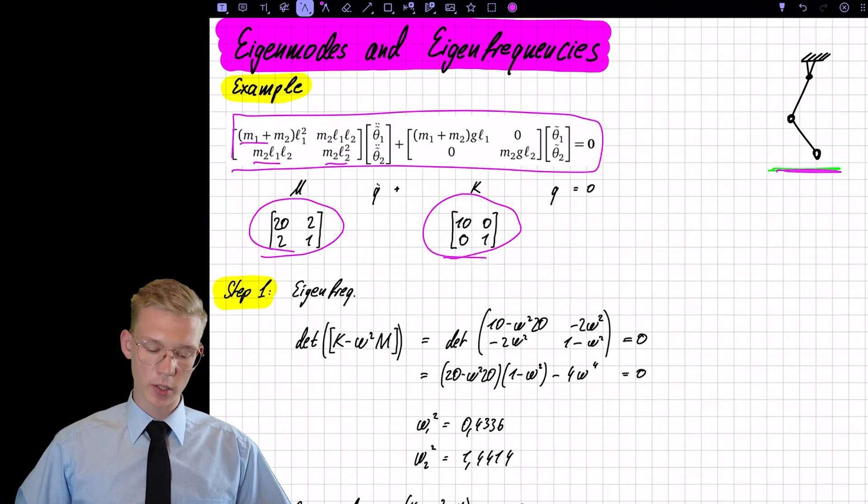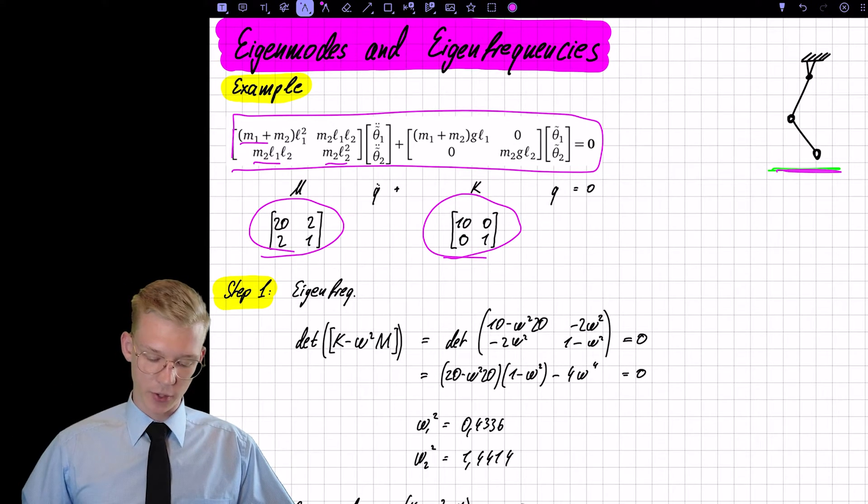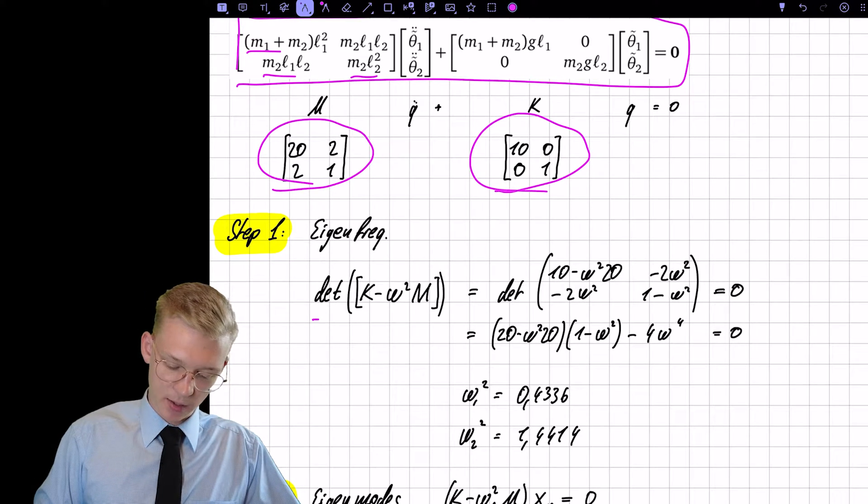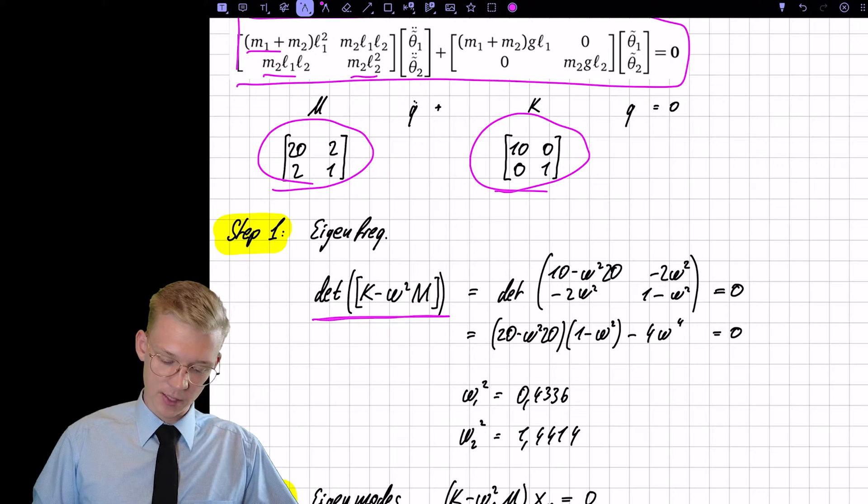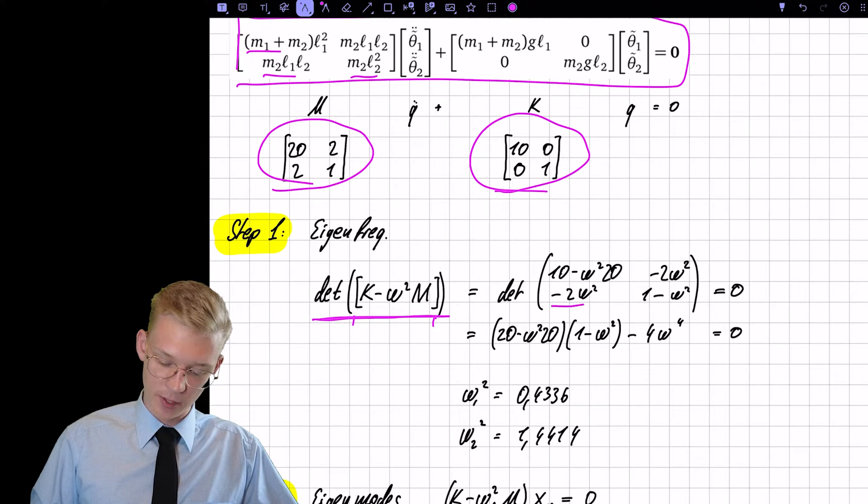So now we want to do the things that we saw in the last video and that is first get the eigenfrequencies. To get the eigenfrequencies we have to set the determinant of this matrix to zero. So we have this matrix.